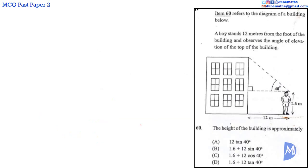Question 60. The height of the building is X + Y, where Y is the height of the boy, which is 1.6 meters. In this right-angled triangle, considering the angle of 40 degrees, the length of the adjacent side is 12 meters. We are asked to find the opposite side, X.